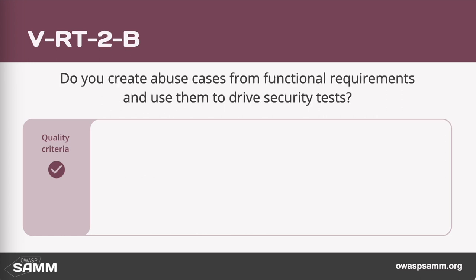Note that this is one of the few streams where the security activities across the three maturity levels are not really building on top of each other. At level two, this is where security experts need to identify what the abuse cases are. As you can see, this is not related to fuzzing — fuzzing is sort of an independent thing that you should be doing. A pen test might be meaningful to identify those abuse cases for important business features.